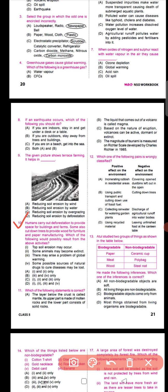Question number ten says: humans carry out deforestation to provide space for buildings and farms, and also cut trees for wood, furniture, and paper manufacturing. Which of the following would possibly result? The options include topsoil erosion, some animals becoming extinct, global warming, and loss of natural drug sources. The correct option is D — all four consequences would result from deforestation.